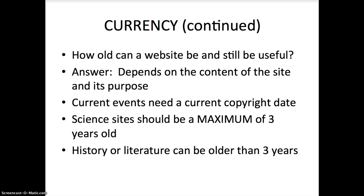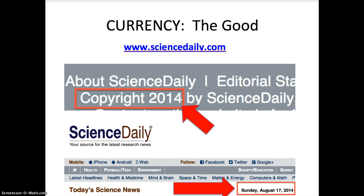Now let's look at an example of a site with good currency: ScienceDaily.com. I looked at the bottom of this website and found the copyright date right away — copyright 2014. That's really good; it means this is a current, up-to-date website. I also found today's science news from August 17, 2014. At the top of each article, ScienceDaily publishes the date the article was uploaded — this one was uploaded that same day. ScienceDaily makes it very easy to find the date; they don't hide it from you.